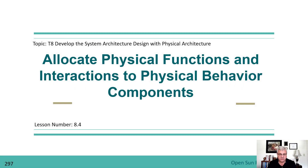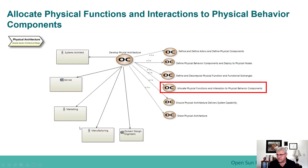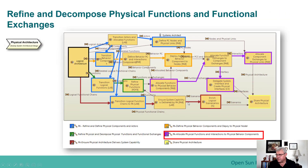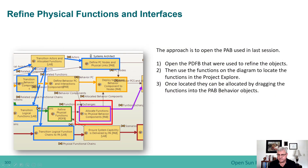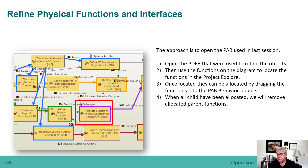In this phase we're going to continue the lessons introduction to Capella by allocating physical functions and interactions to the physical behavior components. We're going to finish what we started in the last session. To do that we will execute this capability, which follows the capability we previously did where we refined the physical functions. The approach we will use is to open the PAB used in the last session.